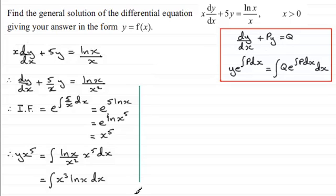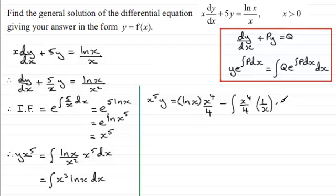Now what we've got is this term, which I'm going to reverse round as x to the power 5y, and then it equals this integral. Now to integrate this, we need to do it by integration by parts. So I'm assuming you're familiar with that, where we take the natural log of x and multiply this by the integral of this part, which is x to the power 4 over 4. And then we subtract the integral of x to the power 4 over 4 and multiply it by the differential 1/x, and we integrate this all with respect to x.